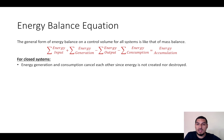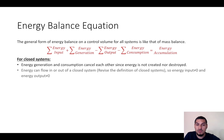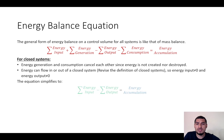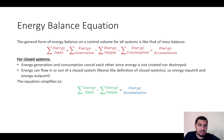For closed systems, there is no flow of mass, but there can be a flow of energy — there might be heat, there might be work. So the energy input and energy output are not zero. There is no contradiction between having energy in and out and being a closed system. The equation simplifies to: energy input minus energy output equals energy accumulated.